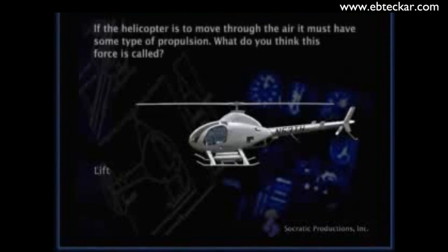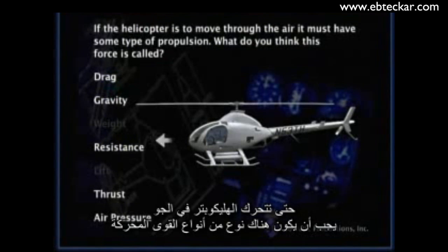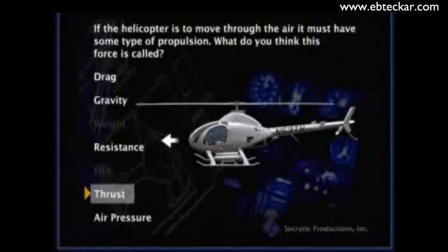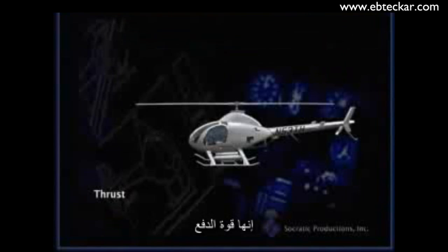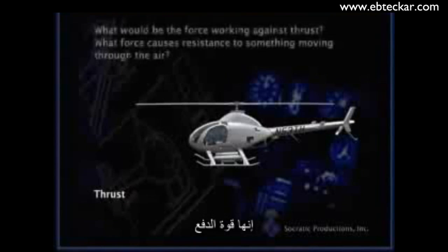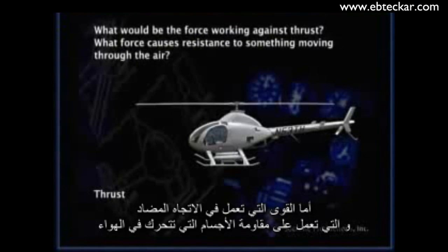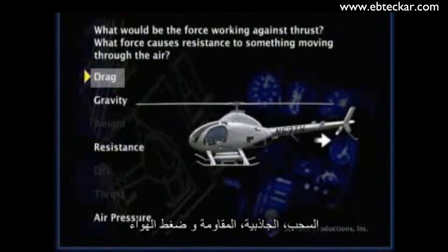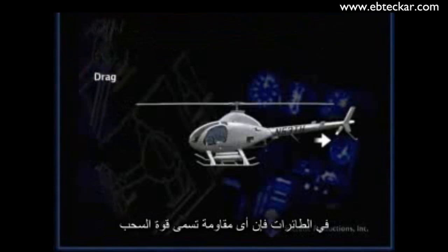If the helicopter is to move through the air, it must have some type of propulsion. The force that moves the helicopter through the air is thrust. And what would be the force working against thrust? What force causes resistance to something moving through the air? In an aircraft, anything that resists movement is called drag.